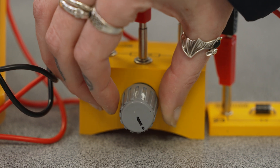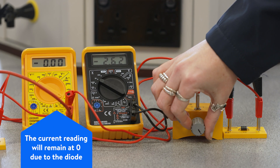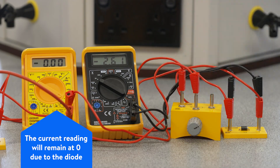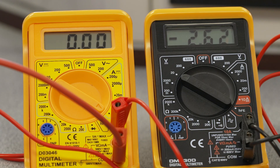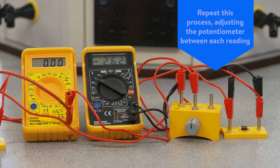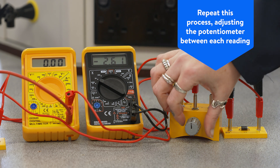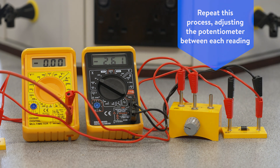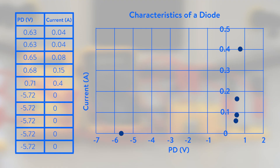Reset the potentiometer. The current reading will remain at zero because we're using a diode through which current will only flow one way. Repeat the process of taking readings from the voltmeter and ammeter, adjusting the potentiometer slightly in between. Plot the values of current and potential difference voltage onto a graph. This time the graph does not need to include negative readings for current as the diode prevents these. For negative voltage readings the current will always be zero due to the one-way non-ohmic characteristic of the diode.